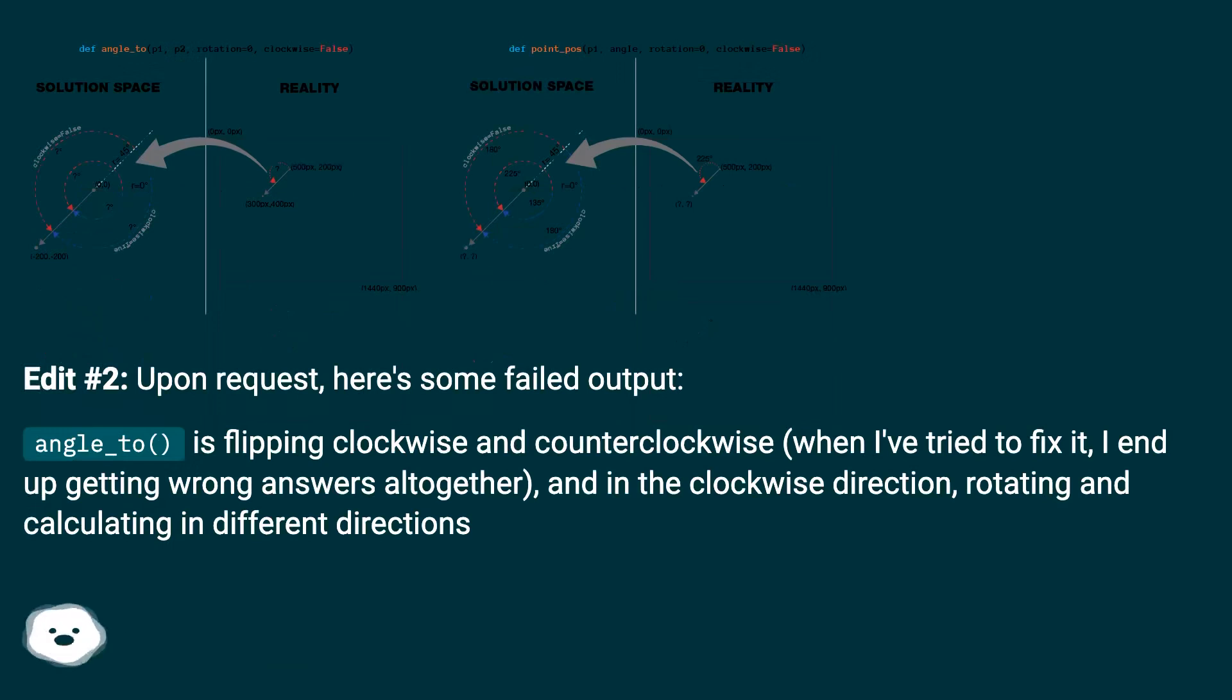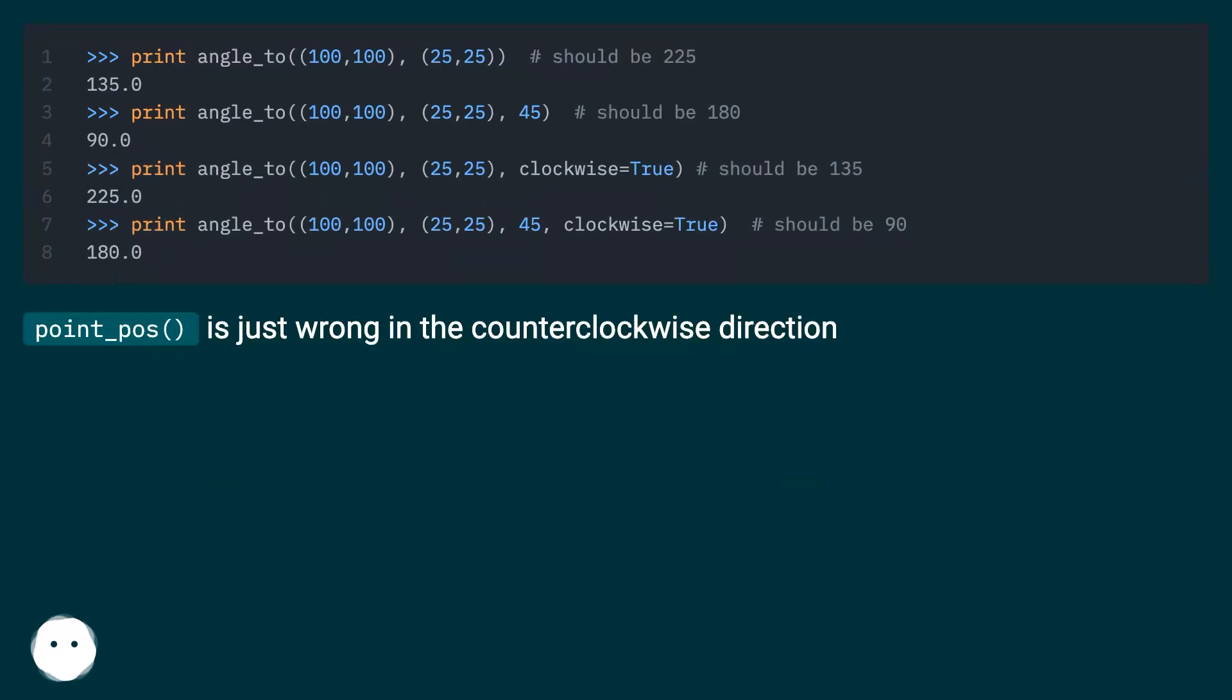Edit number two: upon request, here's some failed output. angle_to() is flipping clockwise and counterclockwise. When I try to fix it, I end up getting wrong answers altogether in the clockwise direction, rotating and calculating in different directions. point_pos() is just wrong in the counterclockwise direction.